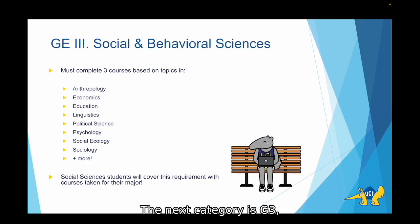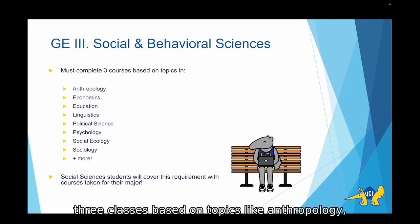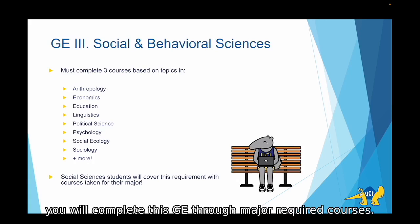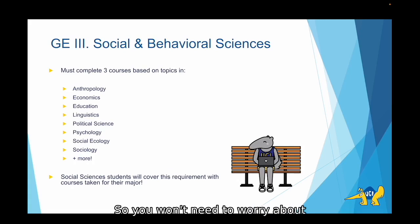The next category is GE 3, Social and Behavioral Sciences. For this category, you'll need to complete three classes based on topics like anthropology, economics, education, linguistics, and more. As a student under Social Sciences, you will complete this GE through major required courses, so you won't need to worry about finding additional classes that count for this GE.